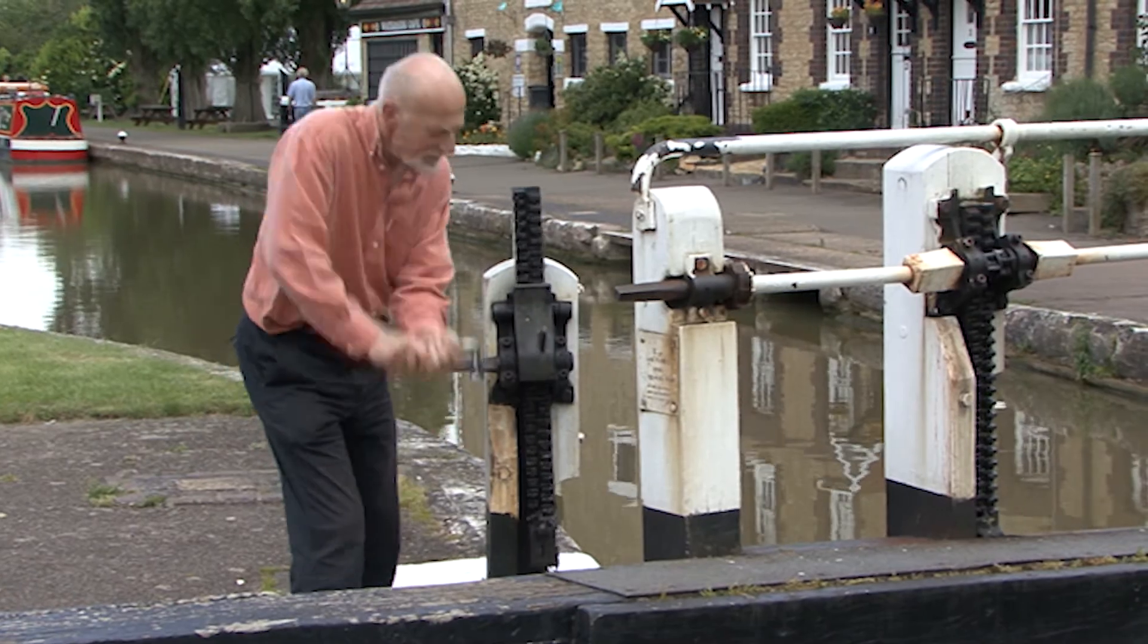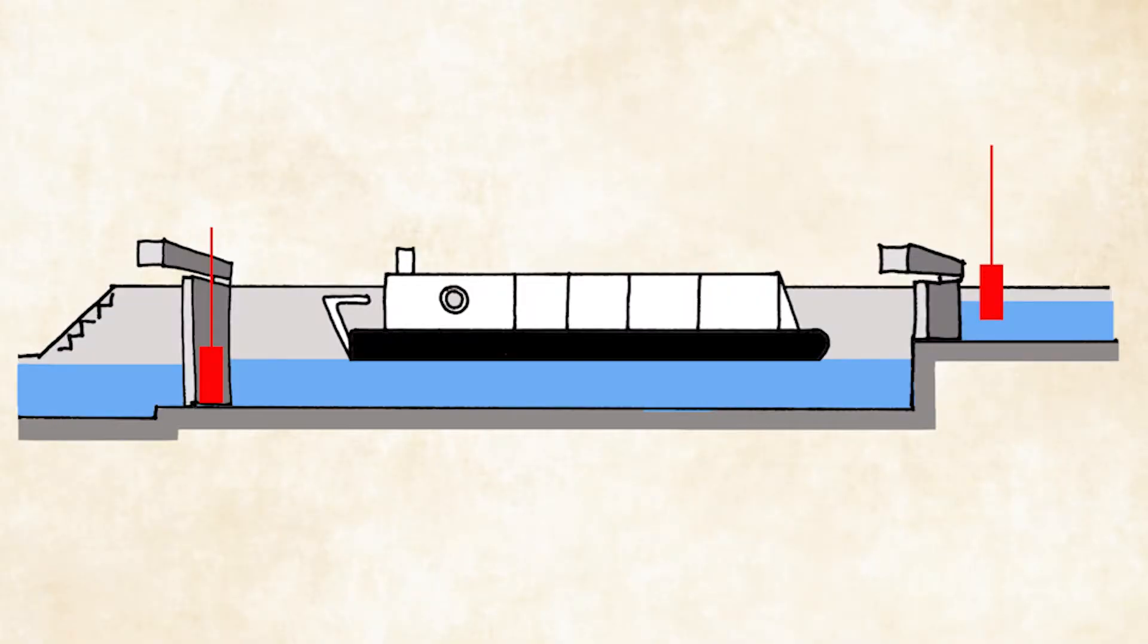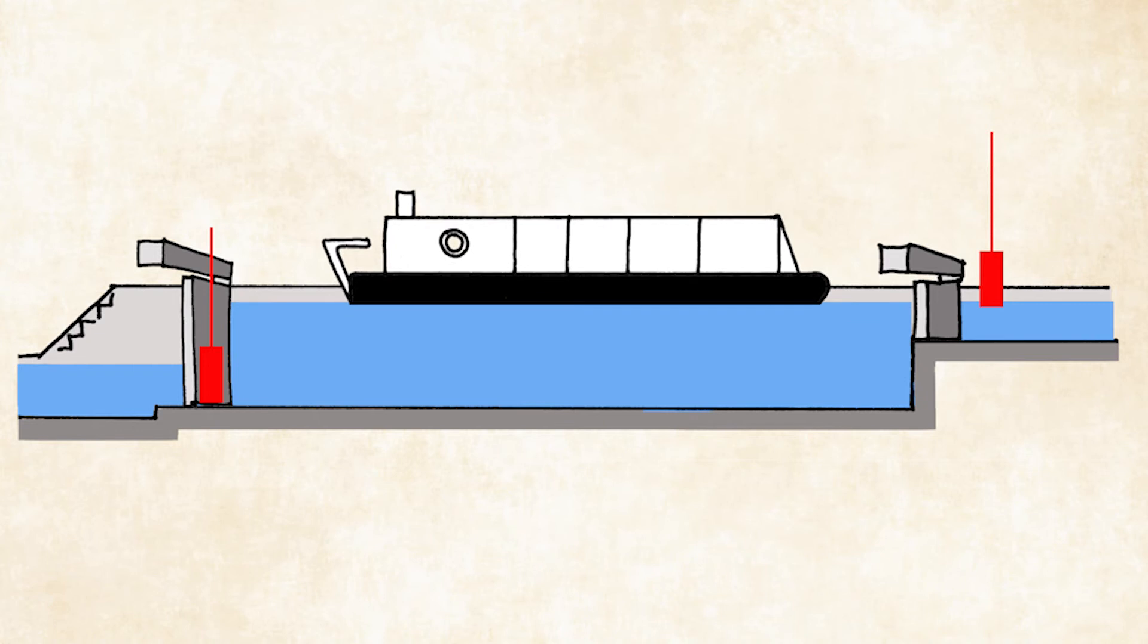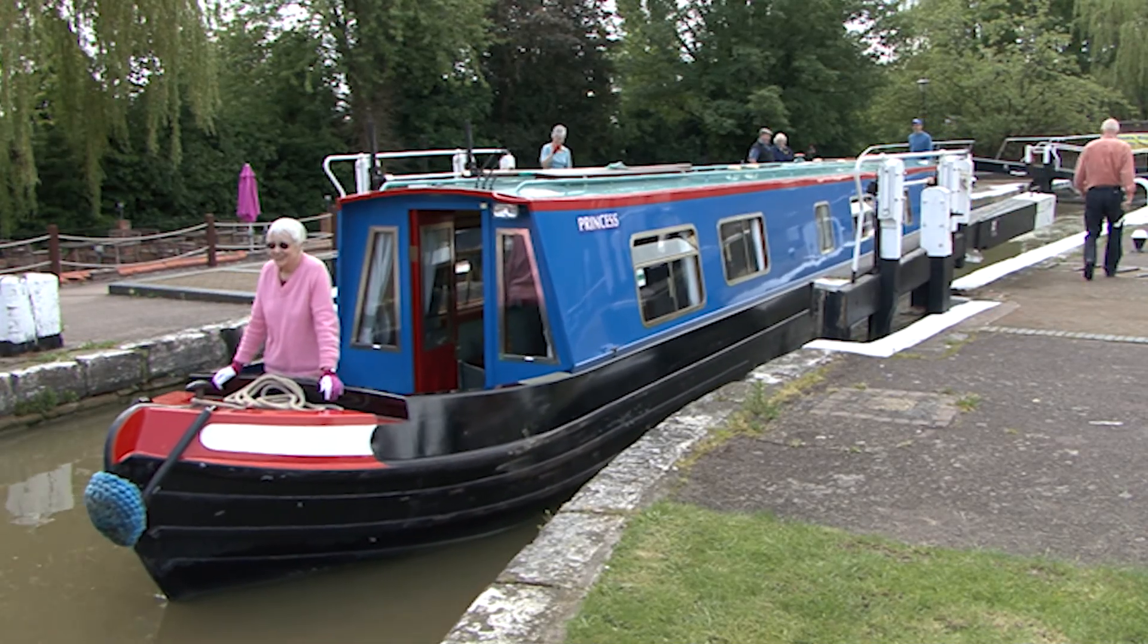Now the upper paddles are open to allow water from the higher level to fill the lock. As the lock fills, the boat rises. When the levels of the water on either side of the lock gates are the same, they can be opened and the boat can leave the lock.